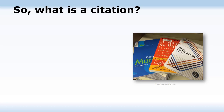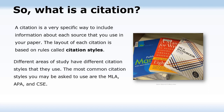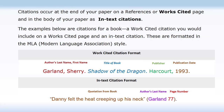So what is a citation? A citation is a very specific way to include information about each source that you use in your paper. The layout of each citation is based on rules called citation styles. Different areas of study have different citation styles. The most common citation styles you may be asked to use are MLA, APA, and CSE. Citations occur at the end of your paper on a references or works cited page, and in the body of your paper as in-text citations. These are formatted in the MLA, or Modern Language Association, style.